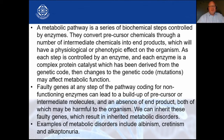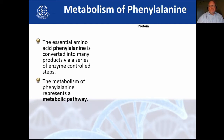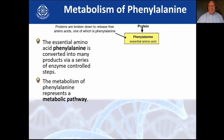We can inherit these faulty genes, which result in inherited metabolic disorders. Examples include albinism, cretinism, and alkaptonuria. Here is phenylalanine — it goes through a metabolic process. The essential amino acid phenylalanine is converted into many products via a series of enzyme-controlled steps, and this metabolism basically represents a metabolic pathway.